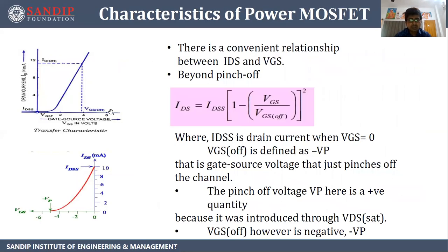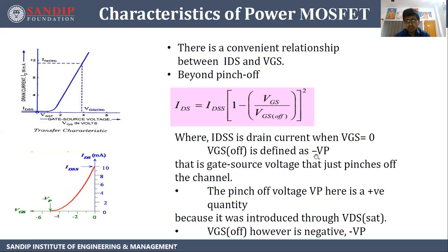The next characteristic is the transfer characteristic, plotted between VGS versus ID — the effect of increasing gate voltage on drain current. Initially there is no channel, so the device remains in cutoff with no current. Once VGS is greater than VGS threshold, drain current starts flowing. The drain-to-source current IDS is given by: IDS = IDSS × (1 − VGS/VGS(off))², where IDSS is the drain current when VGS is zero, and VGS(off) is defined as minus VP (the pinch-off voltage above which drain current becomes constant).